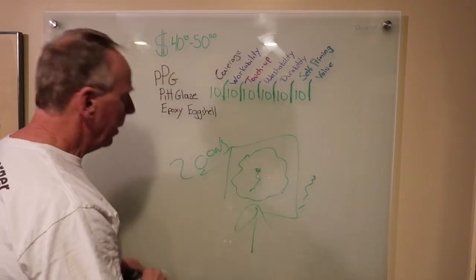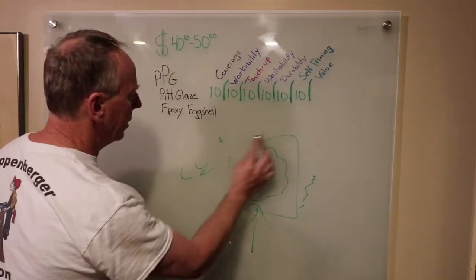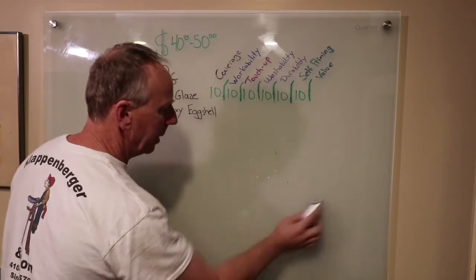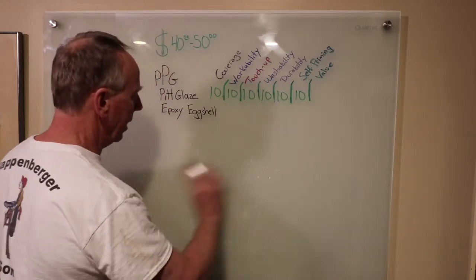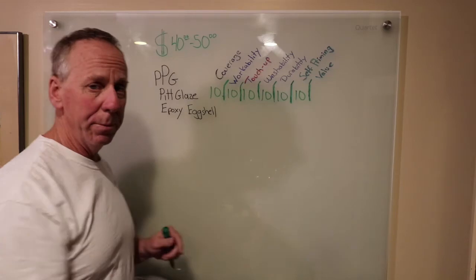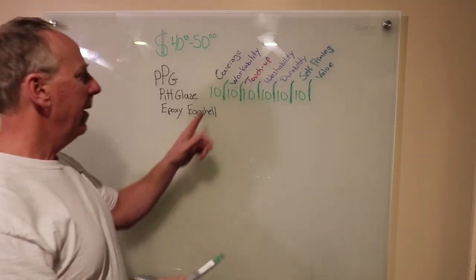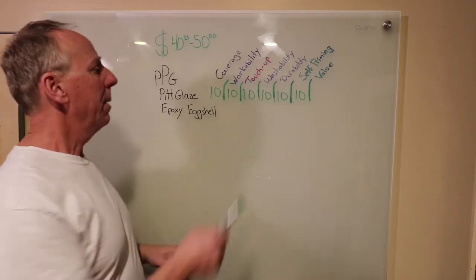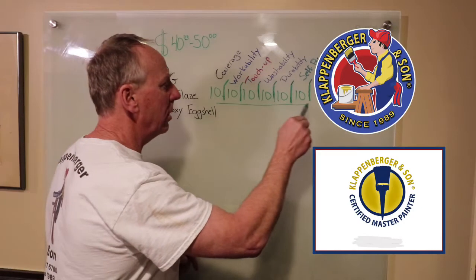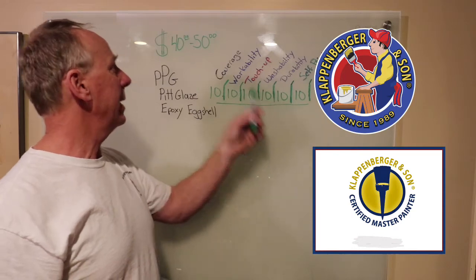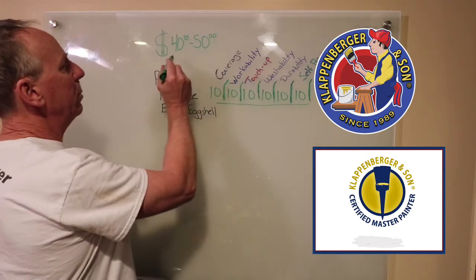Now, we've had other paints that have gotten some 10s that are eggshell paints like the Cashmere Lowluster, which is kind of an eggshell paint, and the Pittsburgh Manor Hall, Speedhide, Primark 200, and they all have some 10s in there. But nobody has that all 10s across the board. There's not a weakness in this paint.